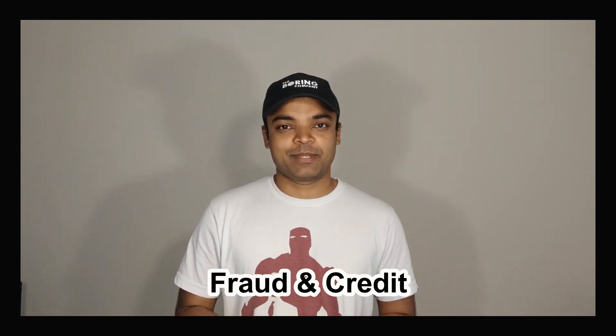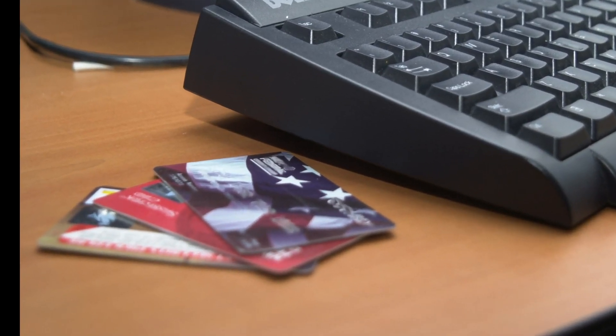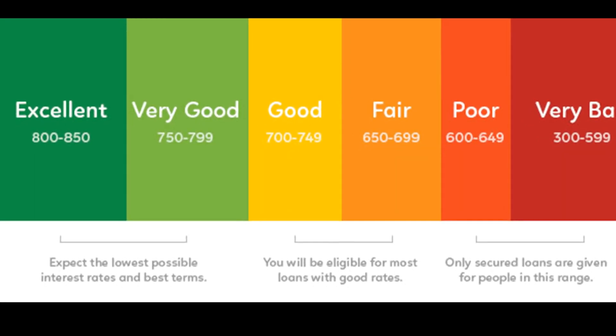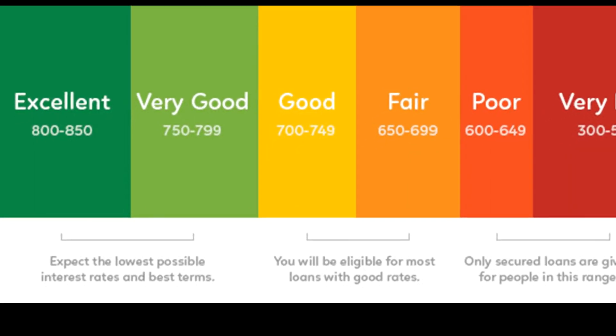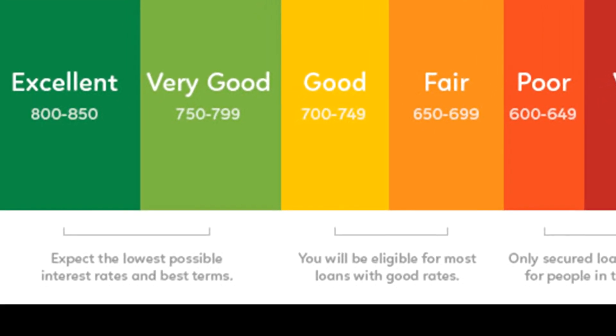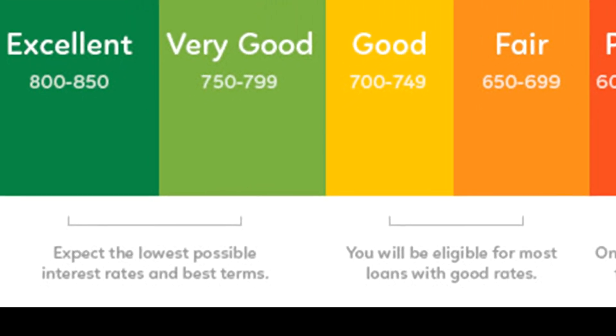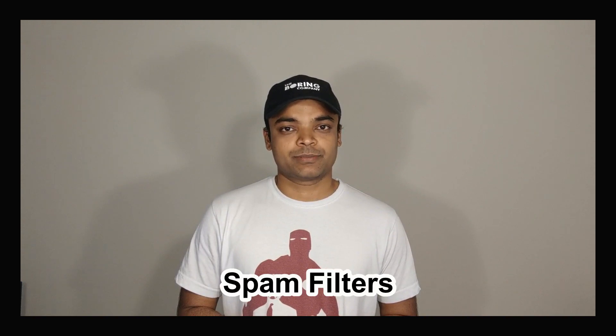The next application is fraud and credit. Supervised learning models can detect fraud within 40 milliseconds. Apart from relying on credit agencies, banks are relying more and more on AI models that can generate the credit worthiness of a customer just based on the transactions they do with the bank.